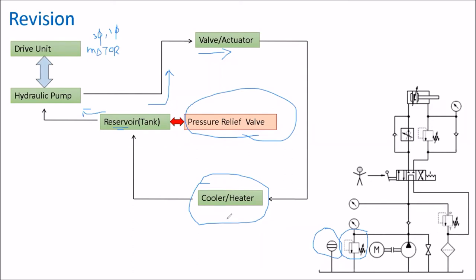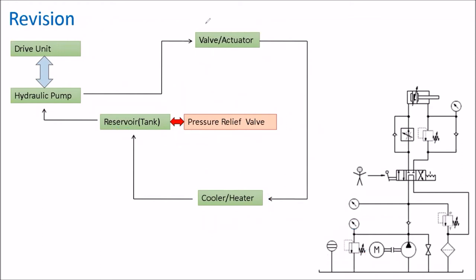If the oil is hot, it will become thin, start to flow very fast, and cause leakage on the hydraulic components. When the oil is cold, it will become thick, making the movement of components very slow and difficult. We have to always make sure the temperature of the oil is at the right level. That is why we have a cooler and heater installed in the power pack — whenever the temperature is out of range, the cooler or heater will operate and bring it back into range. So that was the revision; now we will go into today's topic, which is hydraulic maintenance.